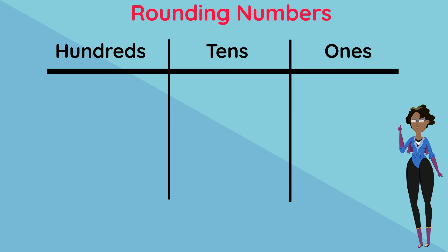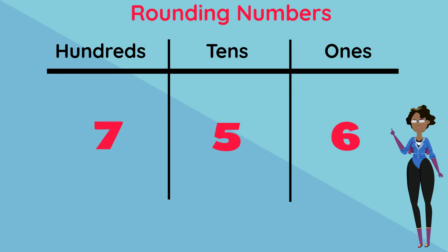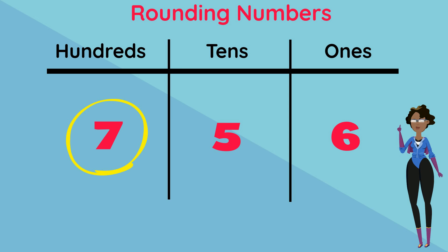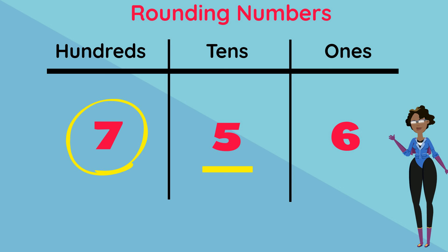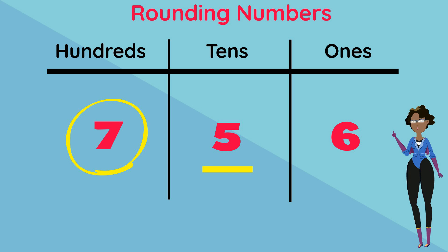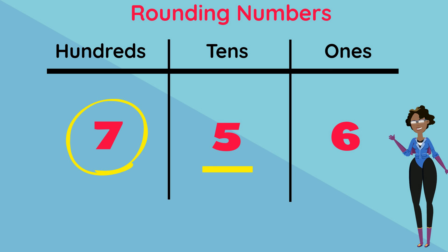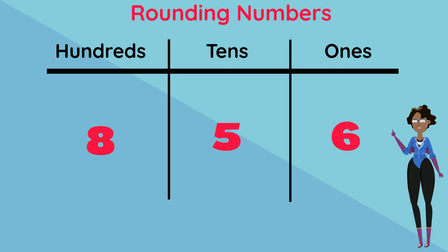Similarly, for rounding to the nearest 100, we write the number given and insert its place value headings. Let's use 756 as an example. Circle or highlight the digit under the 100s heading. Next we look at the digit to the right of the highlighted digit, which would be in the tens column. If this digit is 4, 3, 2, or 1, the numbers in the two columns to the right of the highlighted number are replaced with 0s and the highlighted digit remains the same. If however the digit next to the highlighted number is 5, 6, 7, 8, or 9, we add 1 to the highlighted digit and replace the numbers in the two columns to the right with 0s.